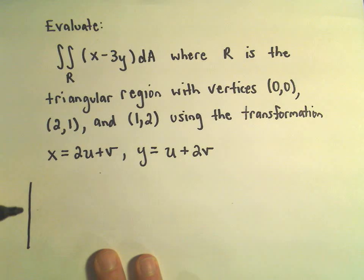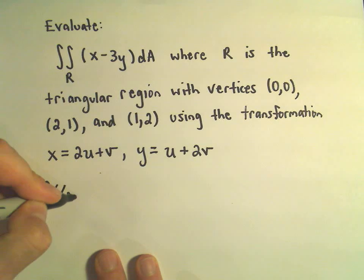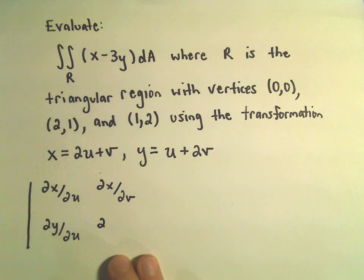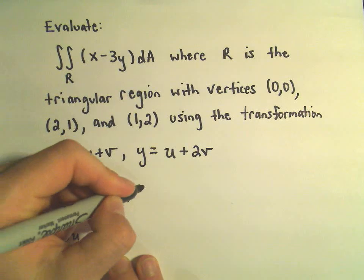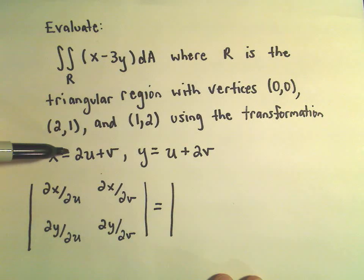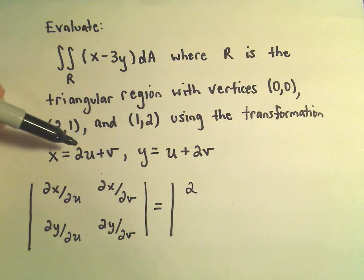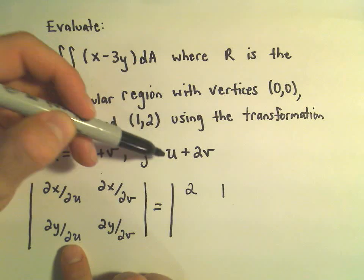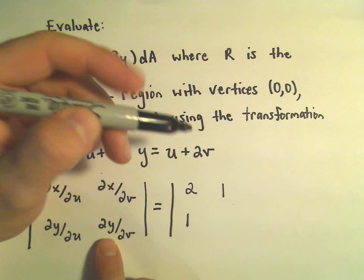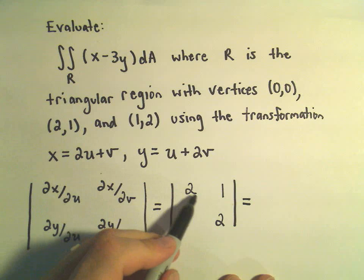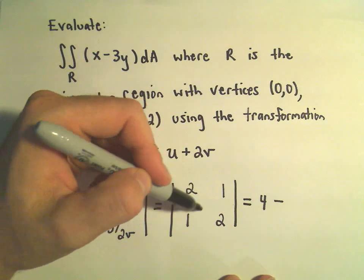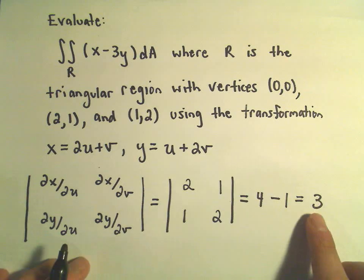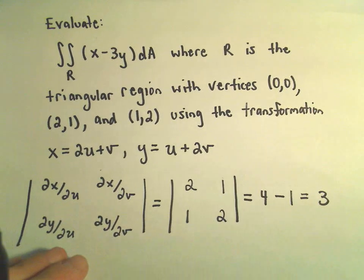To calculate the Jacobian, we take the partial of x with respect to u, the partial of x with respect to v, the partial of y with respect to u, and the partial of y with respect to v. The partial of x with respect to u is 2, partial of x with respect to v is 1, partial of y with respect to u is 1, and partial of y with respect to v is 2. Computing the determinant: 2 times 2 is 4, minus 1 times 1 which is 1, giving us 3. The absolute value of 3 is just 3.